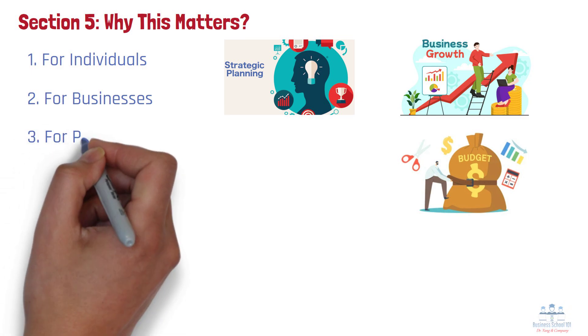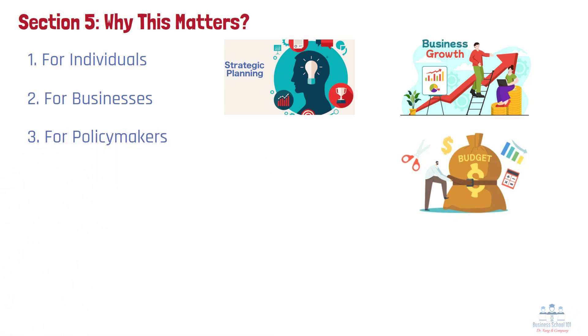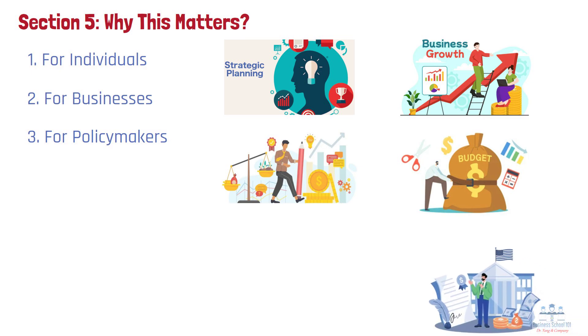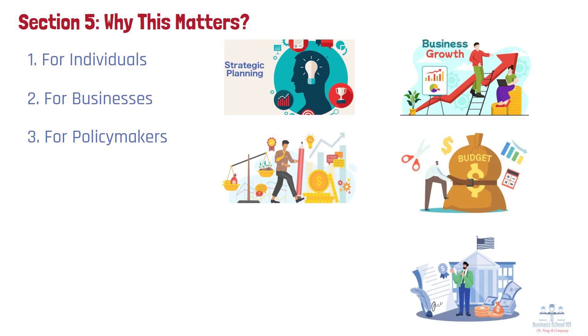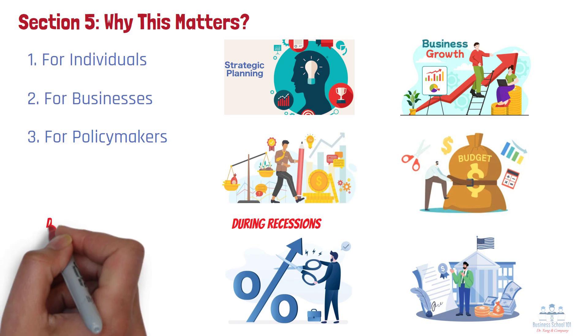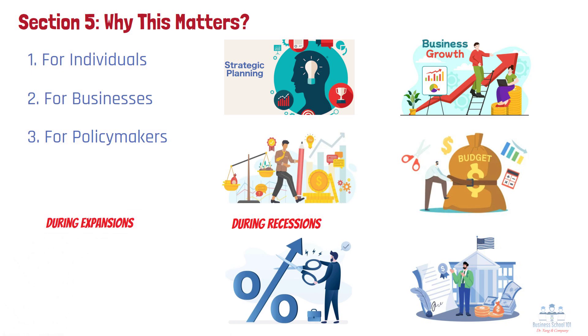Number 3: For Policymakers. For policymakers, understanding business cycles is key to maintaining economic stability. Governments and central banks use tools like fiscal policy and monetary policy to smooth out the extremes of cycles. For instance, during recessions, they might cut interest rates or increase public spending to stimulate growth. Conversely, during expansions, they may raise rates or reduce spending to prevent overheating and inflation.